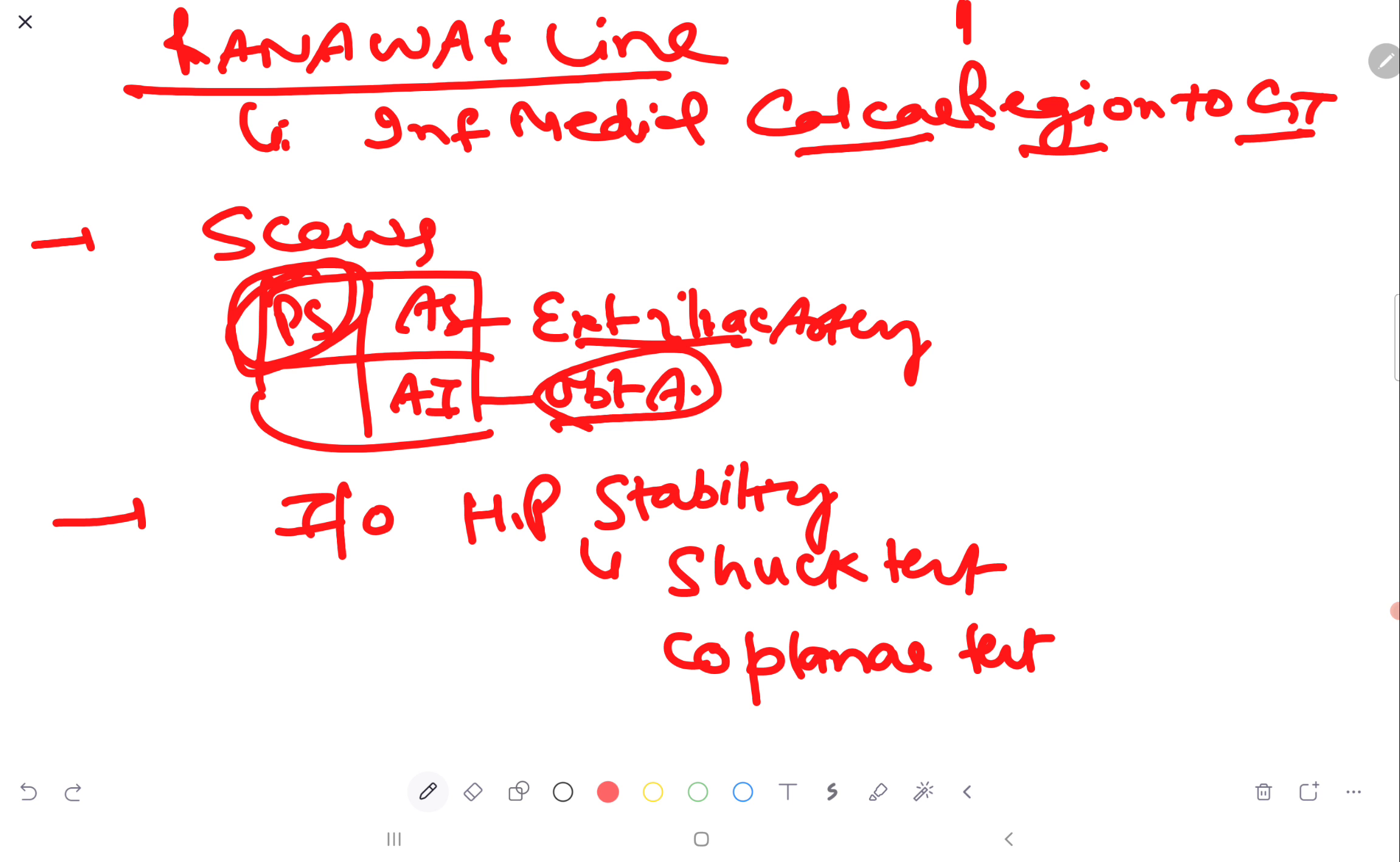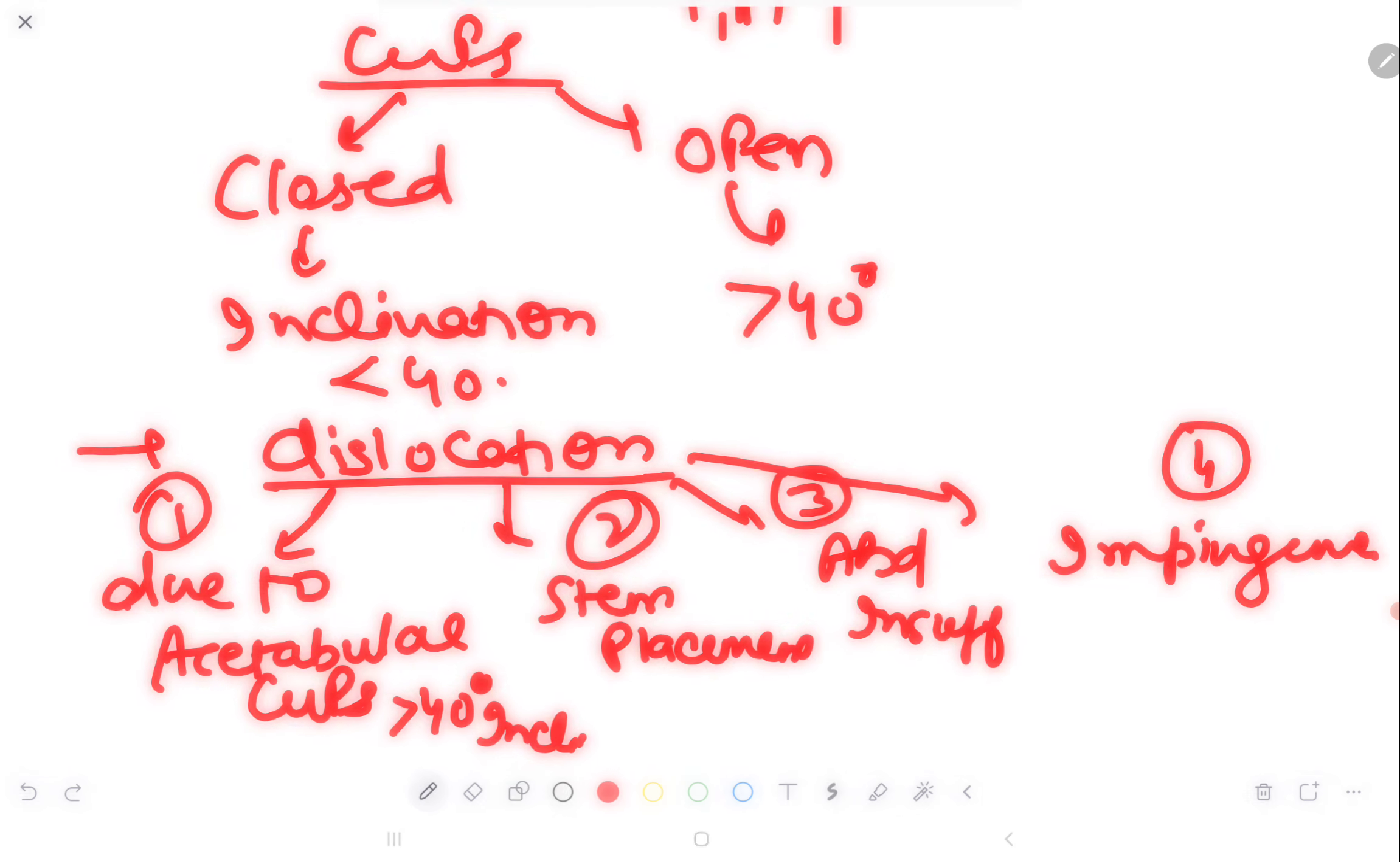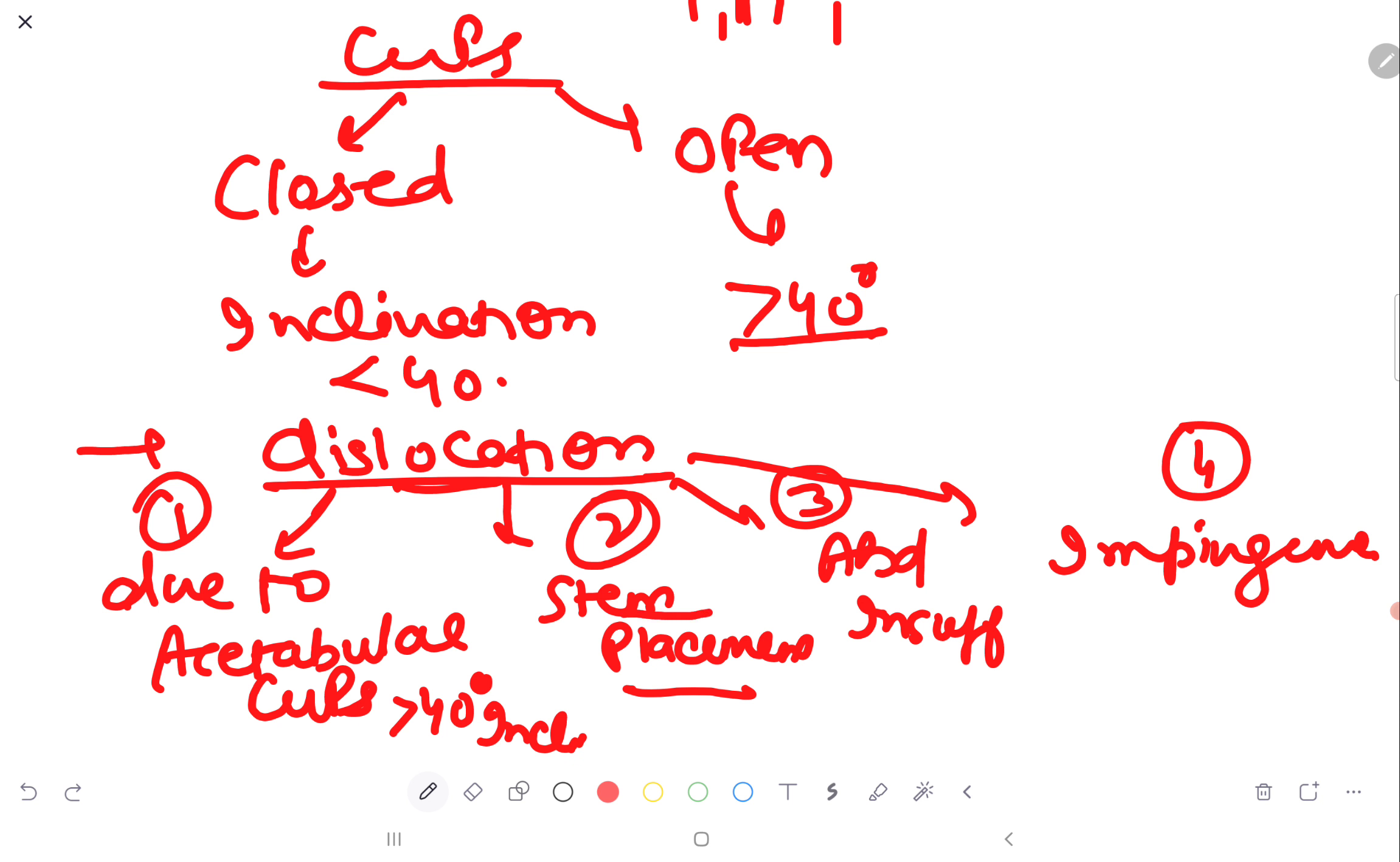Intraoperative hip stability can be checked by shuck test and coplanar test. Cups are of two types, closed and open. Closed means if inclination is less than 40 degrees. Open means if inclination is more than 40 degrees. Dislocation is further of four types. First is due to acetabular cups, more than 40 degree inclination has high chances of dislocation. Stem placement, abductor insufficiency is type 3, impingement is type 4.